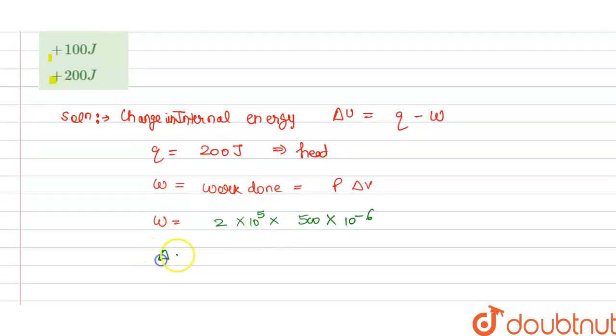So from this, change in internal energy delta U is equals to Q minus work done, that is 200 minus 2 into 10 power 5 multiplied by 500 multiplied by 10 power minus 6.